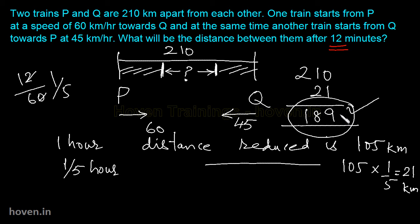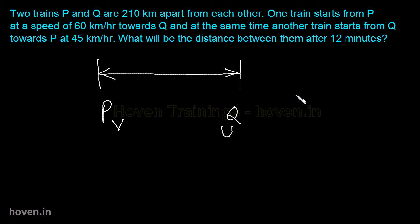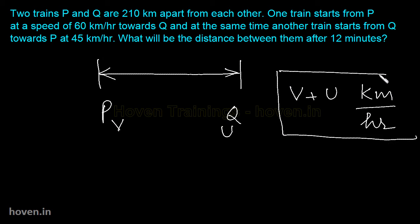So in this way you can solve these types of questions. Basically, when two trains or two objects are moving towards each other, you should know the practical concept that the distance between them reduces at the rate of v plus u km per hour — the sum of their speeds. If this concept is clear to you, you can attack any question of this type. So we'll stop right now, thank you.